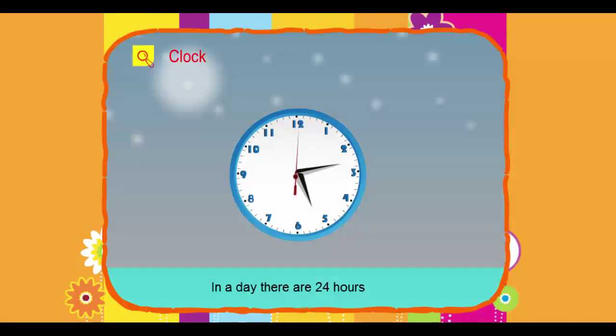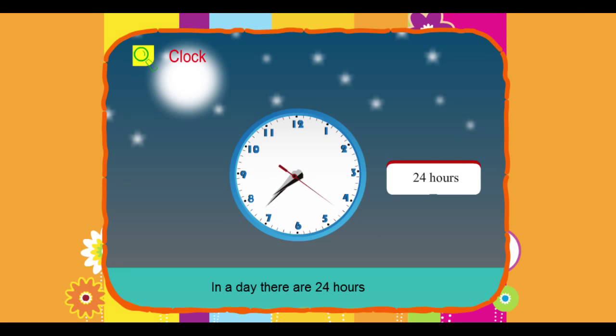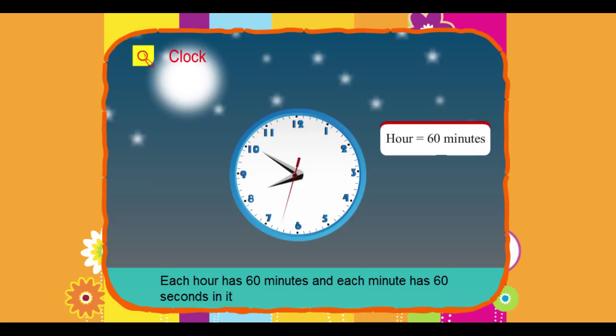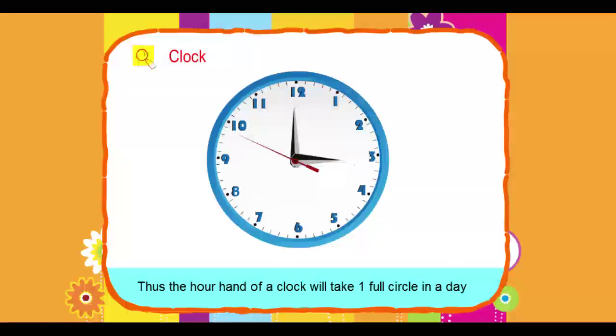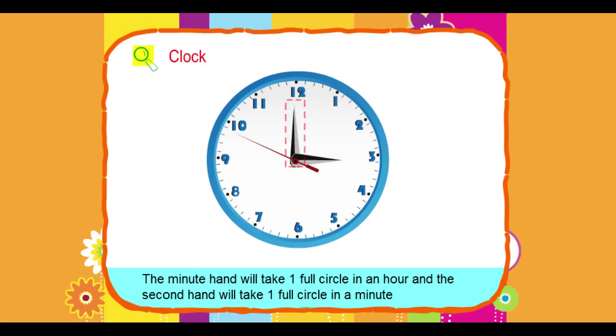In a day, there are 24 hours. Each hour has 60 minutes and each minute has 60 seconds in it. Thus, the hour hand of a clock will take one full circle in a day. The minute hand will take one full circle in an hour and the second hand will take one full circle